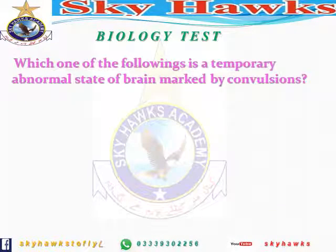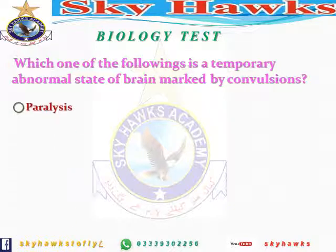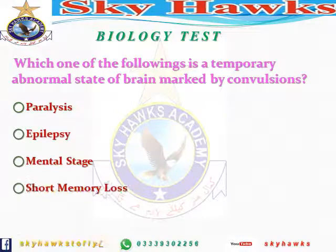Our first question is: which one of the following is a temporary abnormal state of brain marked by convulsions? Options are: Paralysis, Epilepsy, Mental state, Short memory loss. The correct answer is Epilepsy. Epilepsy is an abnormal state of brain marked by convulsions.